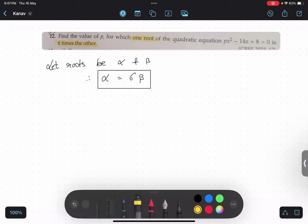If you want to write beta equals to six times alpha that is also correct. One root, that means any one root alpha, is six times the other, six multiplied by the other. So this is done.